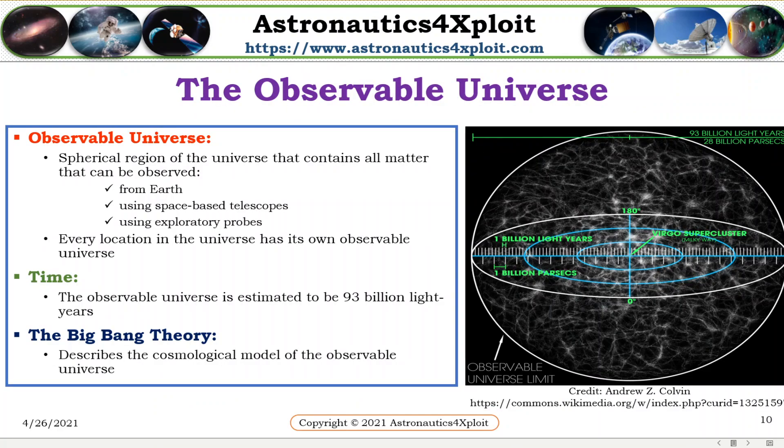The observable universe is the spherical region of the universe that contains all matter which can be observed from Earth, using space-based telescopes and exploratory probes. Every location in the universe has its own observable universe.